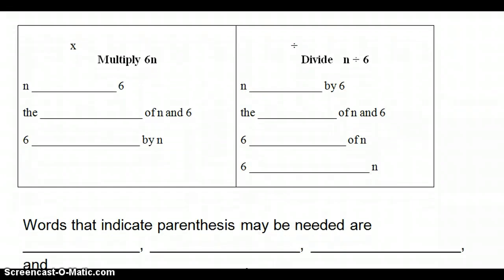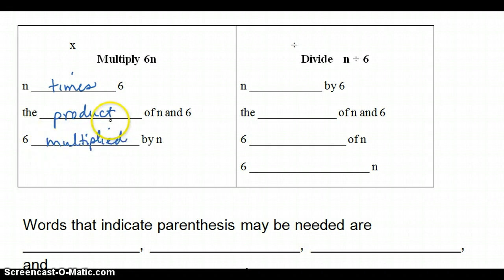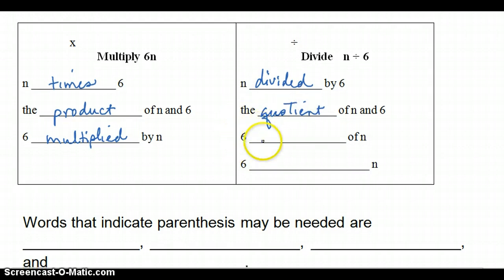Multiply. Here are some words that indicate multiplication. N times 6, the product of N and 6, and 6 multiplied by N. For division, if they spell it out for us and tell us it's divided by 6, sometimes you hear the word quotient, the quotient of N and 6. 6 equal shares of N would be N divided by 6, and then 6 divided into N. 6 is doing the dividing. 6 divided into N. All of these mean N divided by 6.